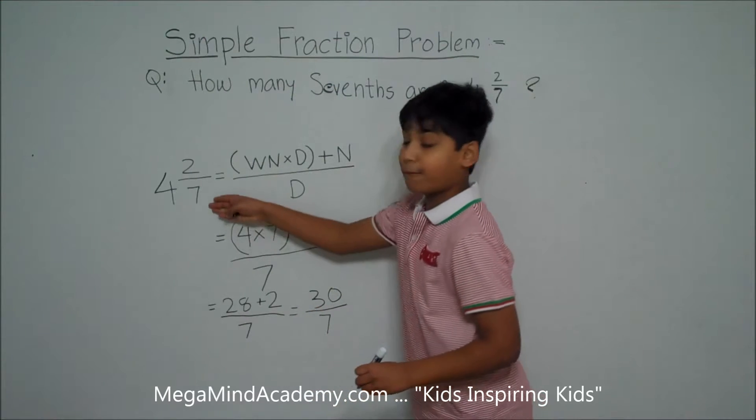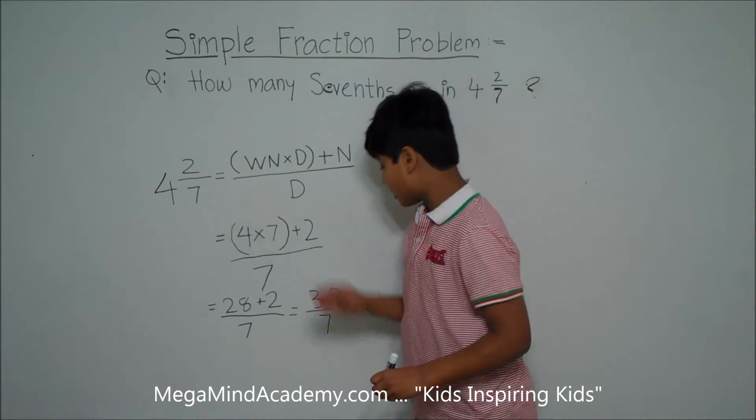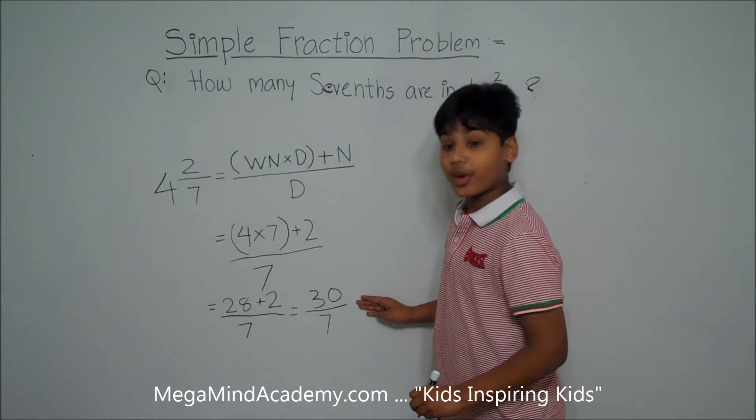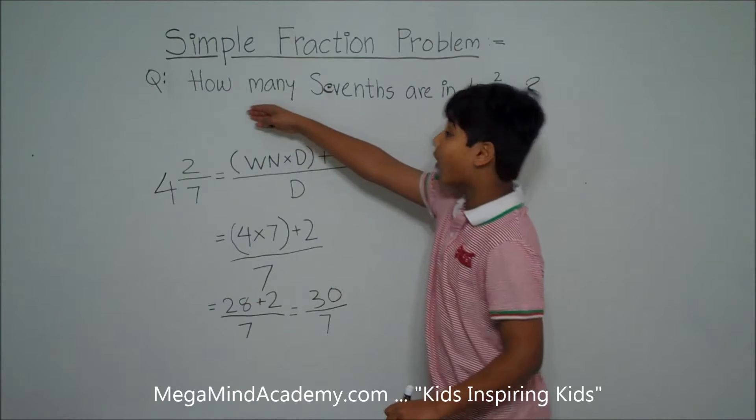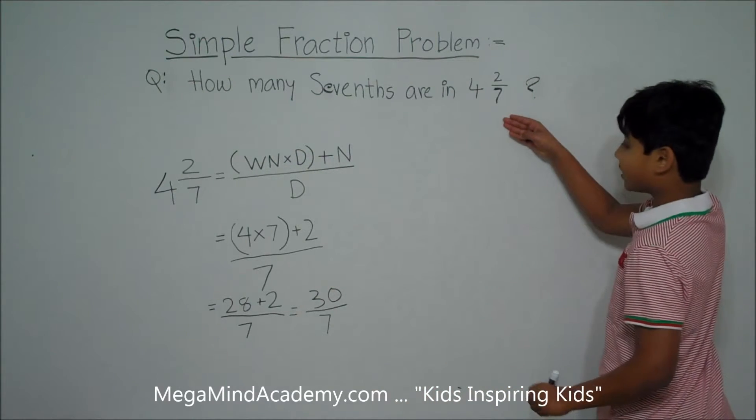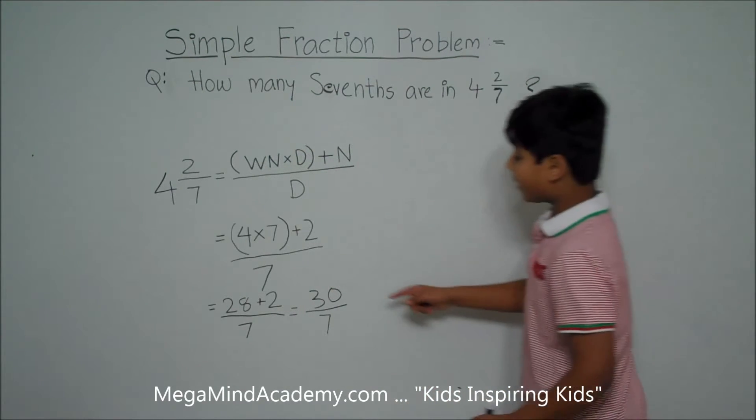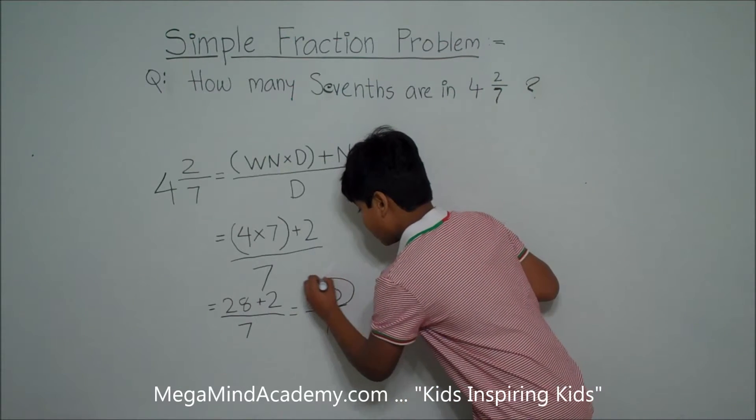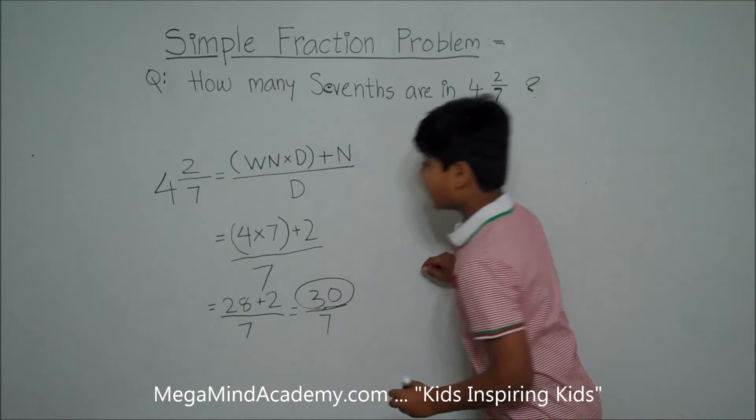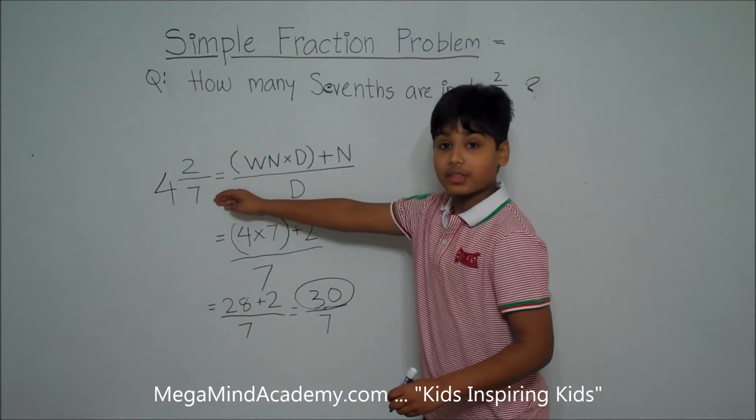So that means that 4 and 2 sevenths is equal to 30 over 7. Now, the problem says, how many sevenths are in 4 and 2 sevenths? There are 30 sevenths in 4 and 2 sevenths.